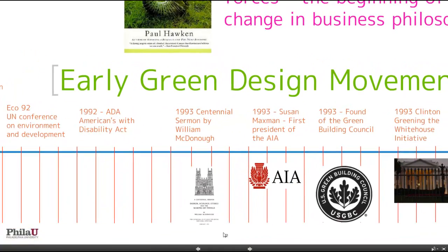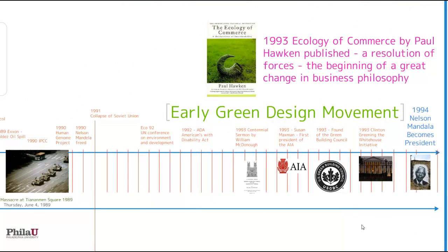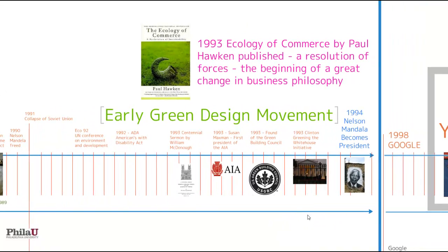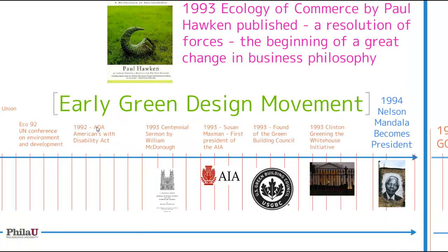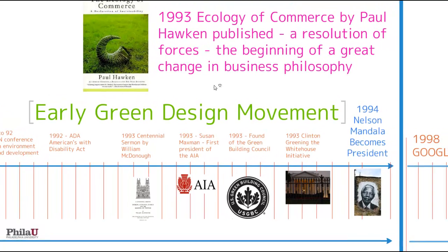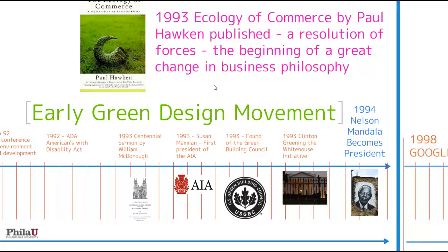By 1993, we start to see the beginnings of the early green movement — and green is different than sustainable, which we'll cover in week three. Here we see the Americans with Disabilities Act: the ultimate expression of empathy for those who don't have the same opportunity as others, the idea that buildings should be accessible to everyone — passed by a Republican president, by the way. 1993 was really the watershed moment in U.S. sustainability history. William McDonough delivered his Centennial Sermon, which you'll be reading next week — one of the key seminal documents and really the foundation of sustainability.